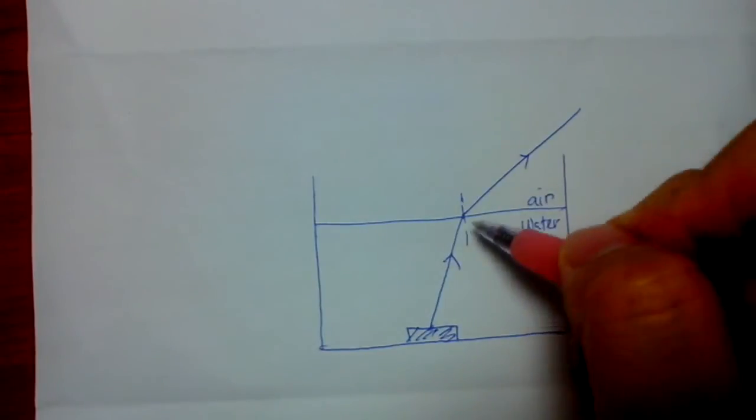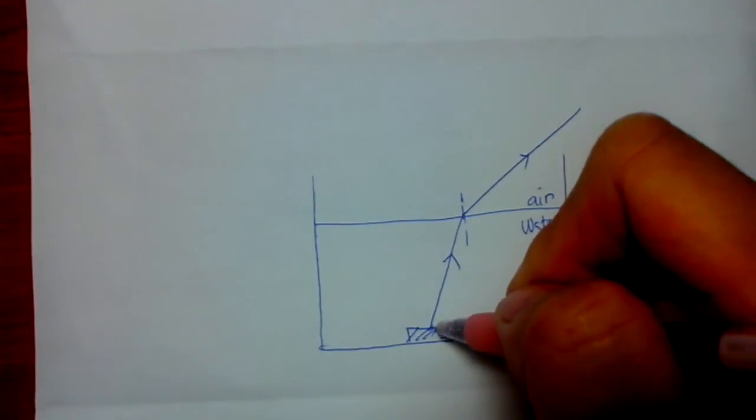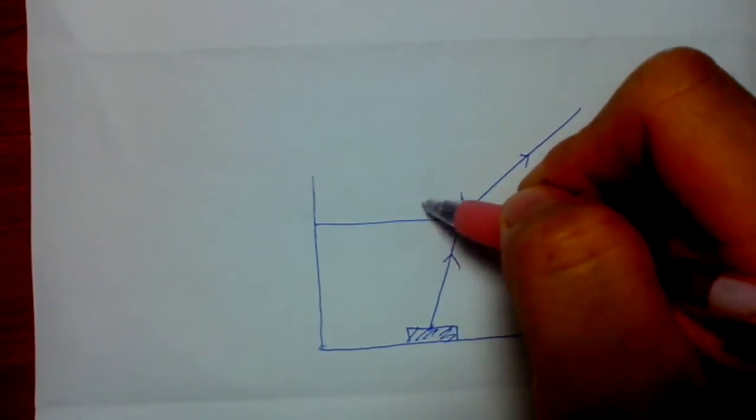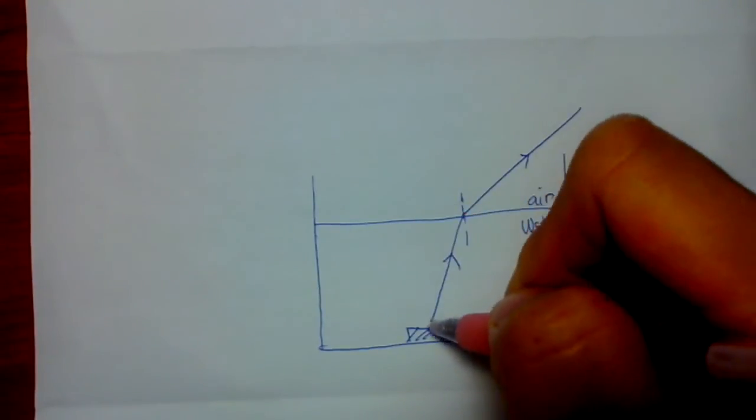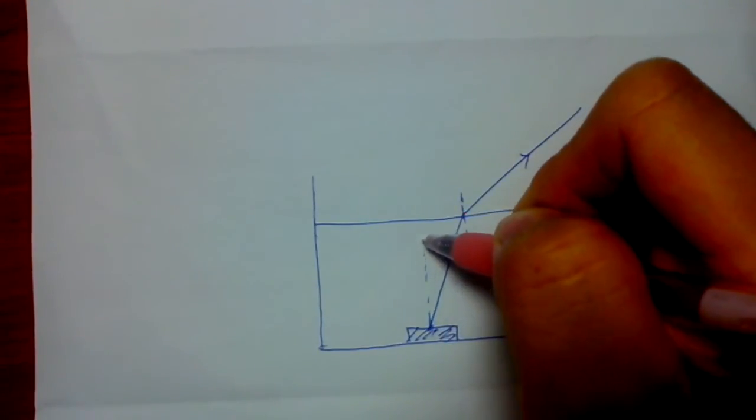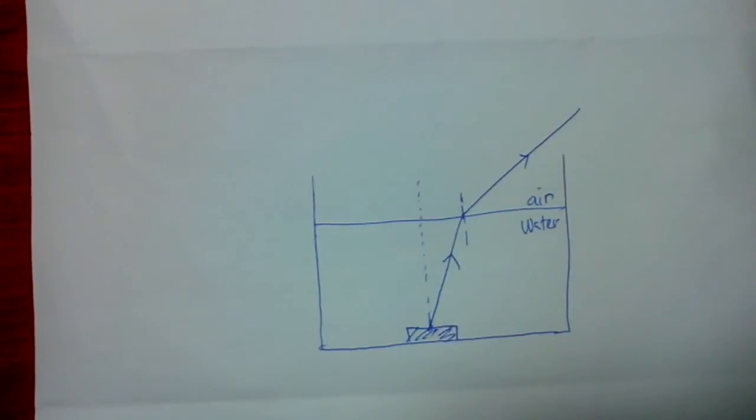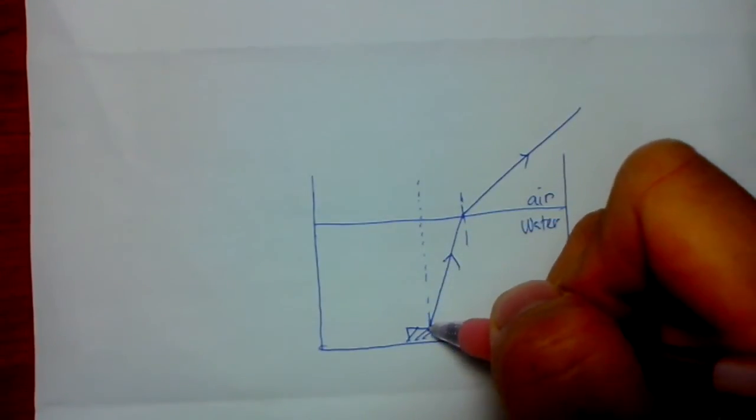Here is how we do our construction. First rule to remember, the image is always vertically shallower or above the object. Let's say we draw a dotted line here vertically above the object. Then the image must be along here but we do not know where.